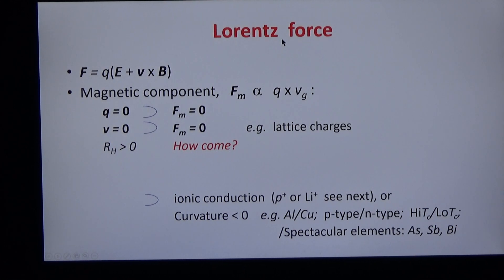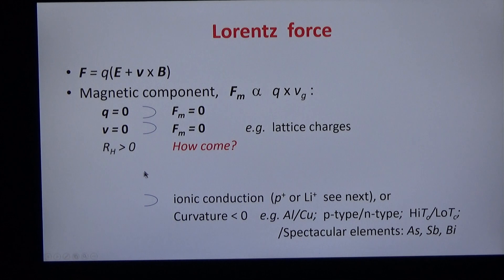The Hall effect depends on the Lorentz force, which has both an electric part and a magnetic part. And the magnetic part is complicated because it depends on both charge and velocity. And when the charge is zero, the magnetic force is zero, as in empty states. And when the velocity is zero, the magnetic force is zero, as in lattice charges.